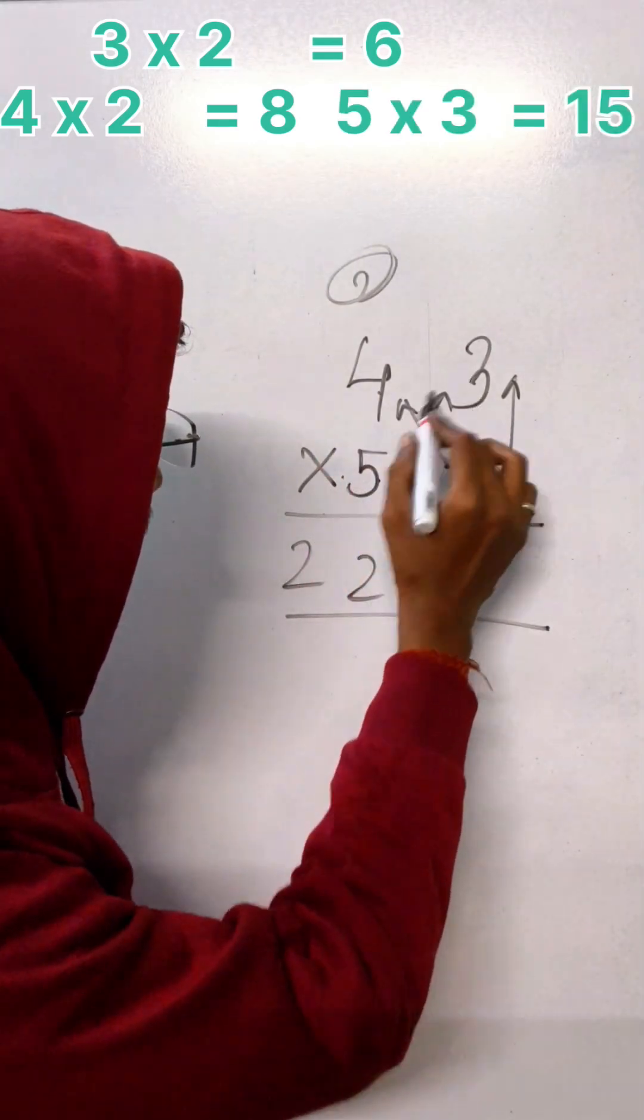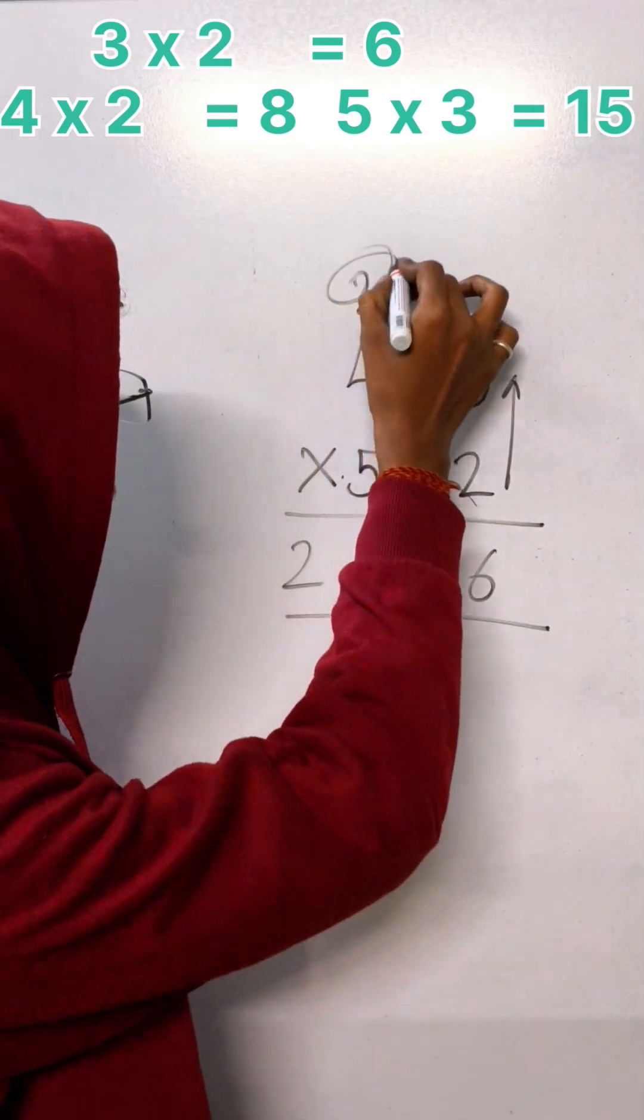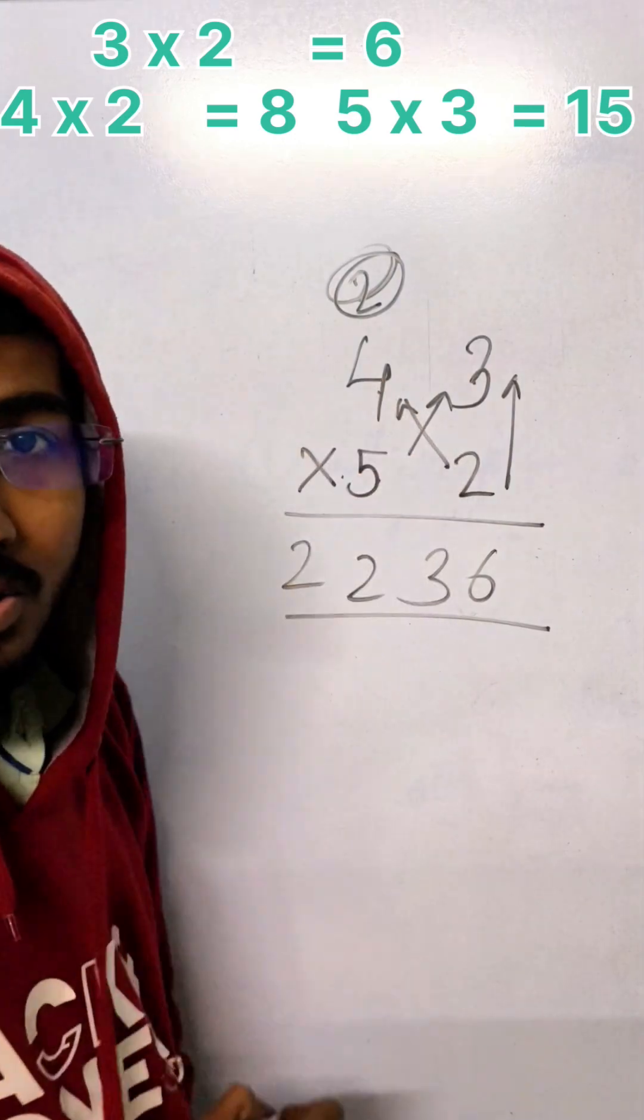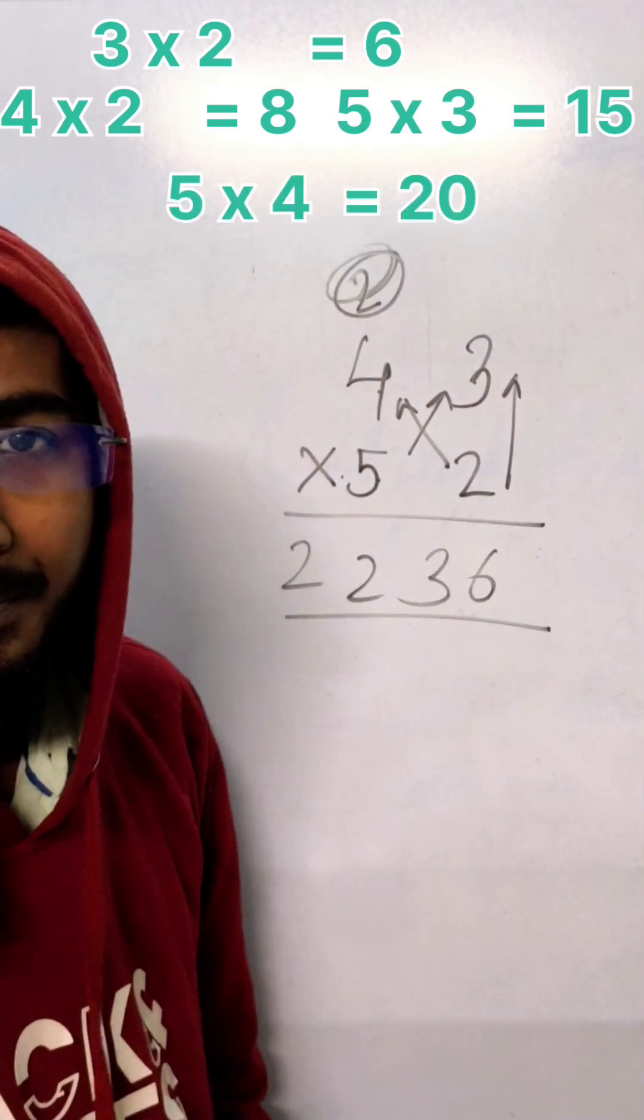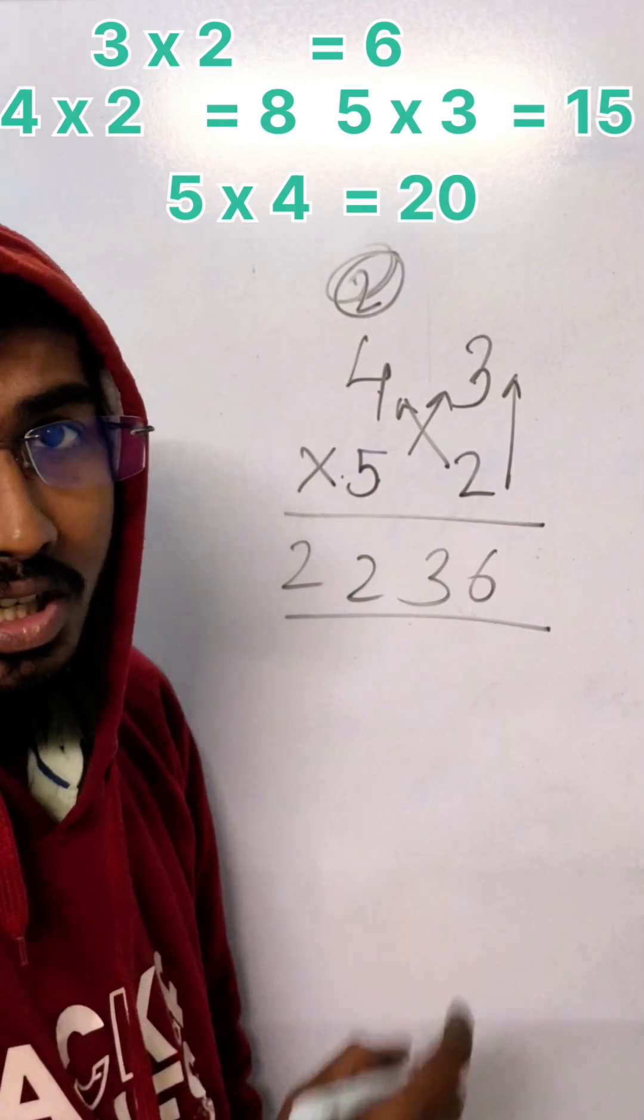4 2s are 8, 5 3s are 15. 15 plus 8 is 23. So write down the 3 and carry 2. 5 4s are 20. 20 plus 2 is 22. So follow Adya education for more such interesting.